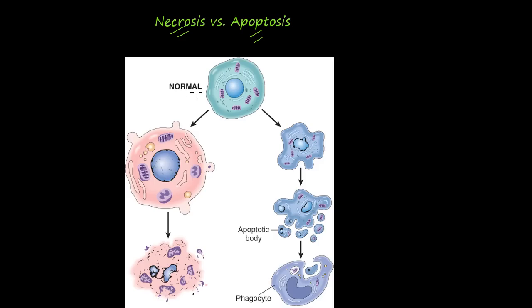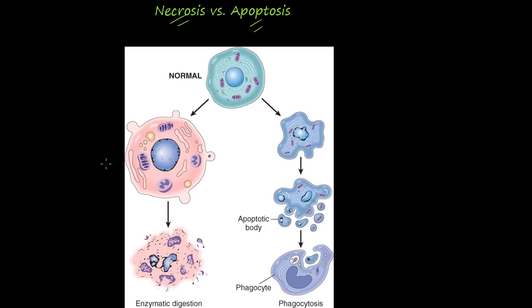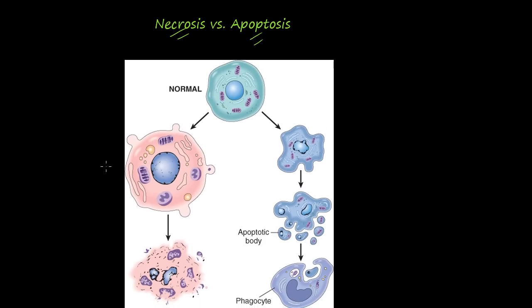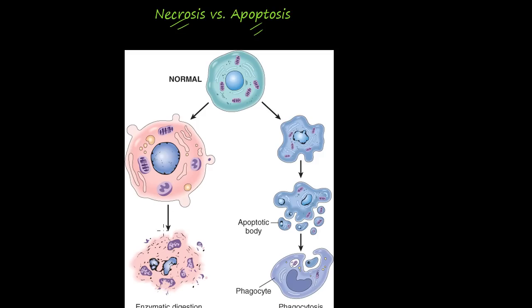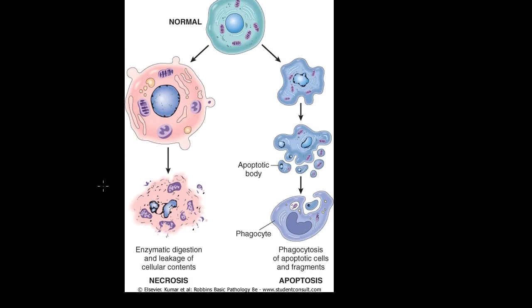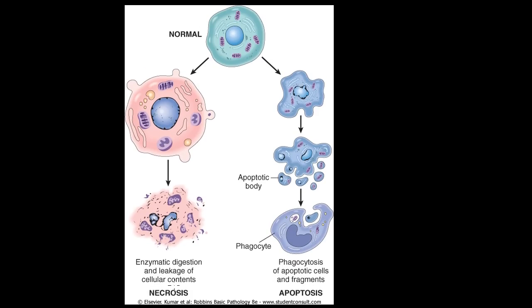So, necrosis versus apoptosis. If a cell — in the first video I talked about how if I was riding a bike and I crashed and slid on the concrete, how some of those skin cells would be damaged. That example is more of an example of the necrosis pathway. Now, both necrosis and apoptosis are ways for a normal cell to die.